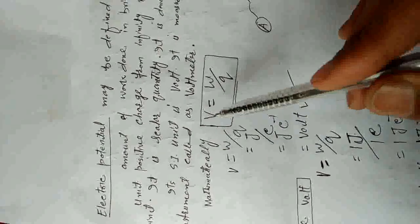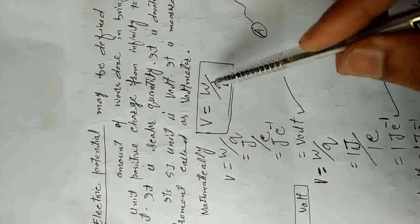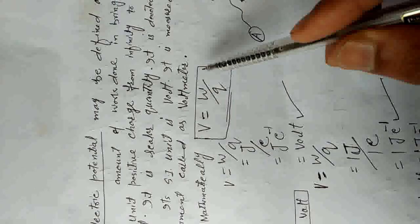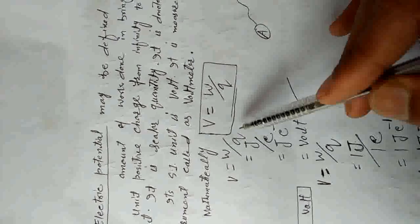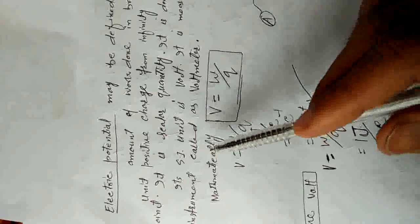Mathematically, electric potential V is equal to W divided by Q, where W is work done and Q represents charge.